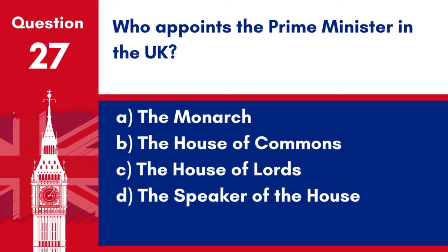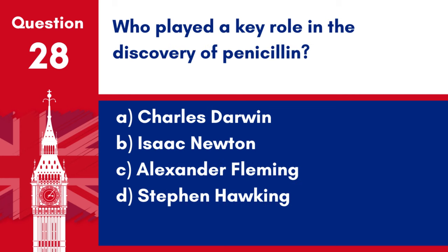Question 27. Who appoints the Prime Minister in the UK? a. The monarch. b. The House of Commons. c. The House of Lords. d. The Speaker of the House. Answer: a. The monarch. The monarch appoints the Prime Minister, who is usually the leader of the political party that has the most seats in the House of Commons.